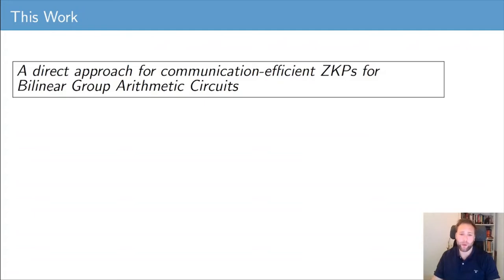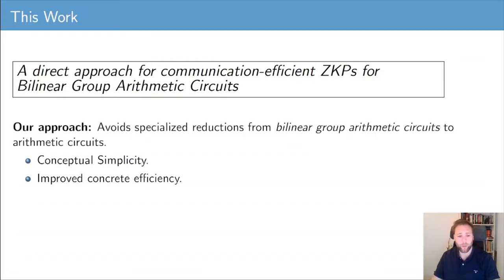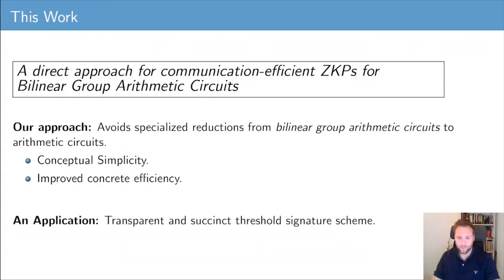For this reason, we develop a direct approach for communication-efficient zero-knowledge proof systems for bilinear group arithmetic circuits. Our approach avoids the reduction from bilinear group arithmetic circuits to arithmetic circuits, which gives us conceptual simplicity and also improved concrete efficiency by avoiding this blow-up. And as an application of our work, we construct the first transparent and succinct threshold signature scheme.